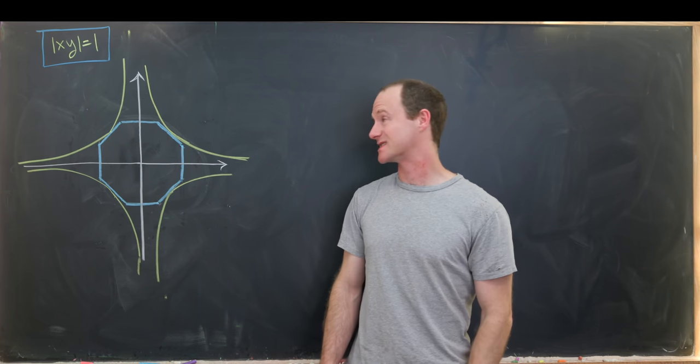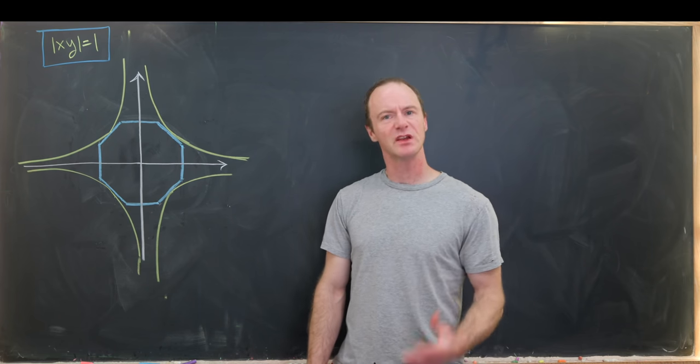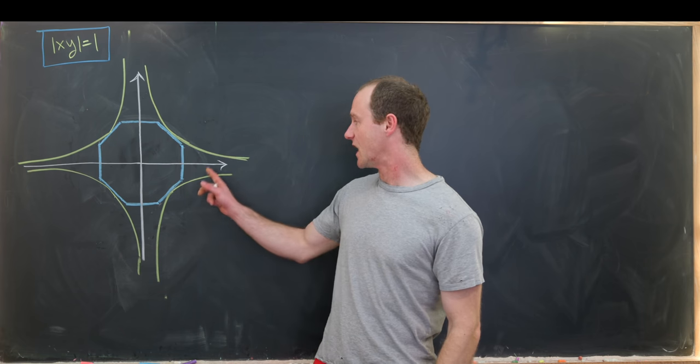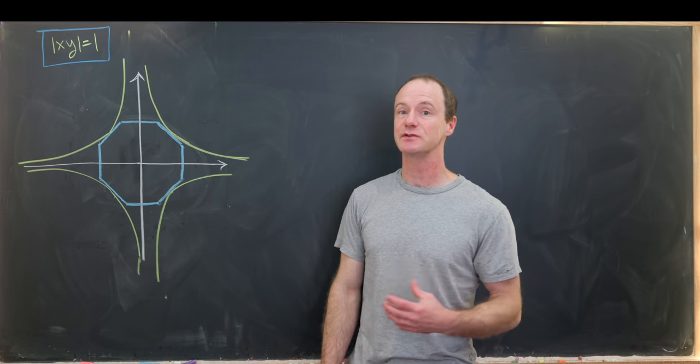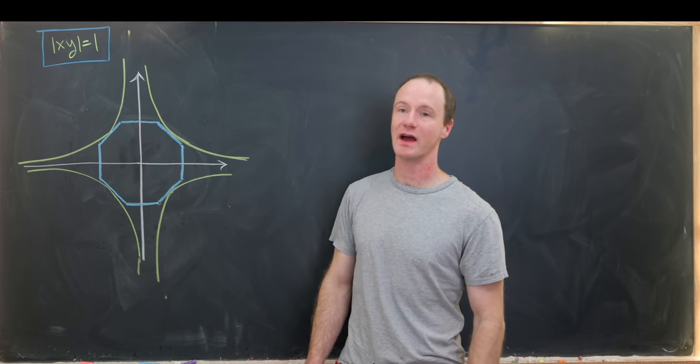So I came up with what I think is a pretty aesthetic geometry problem. So it goes like this. In yellow, we have the graph of the curve that's described by the absolute value of x times y equals 1.